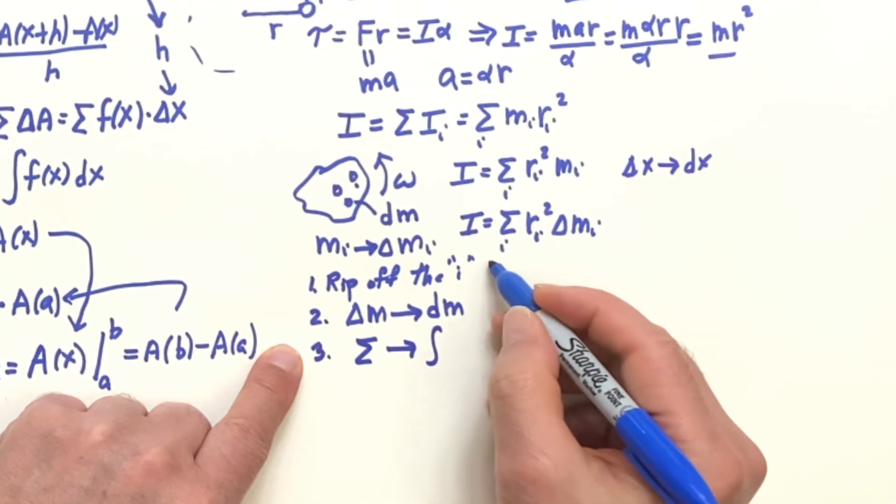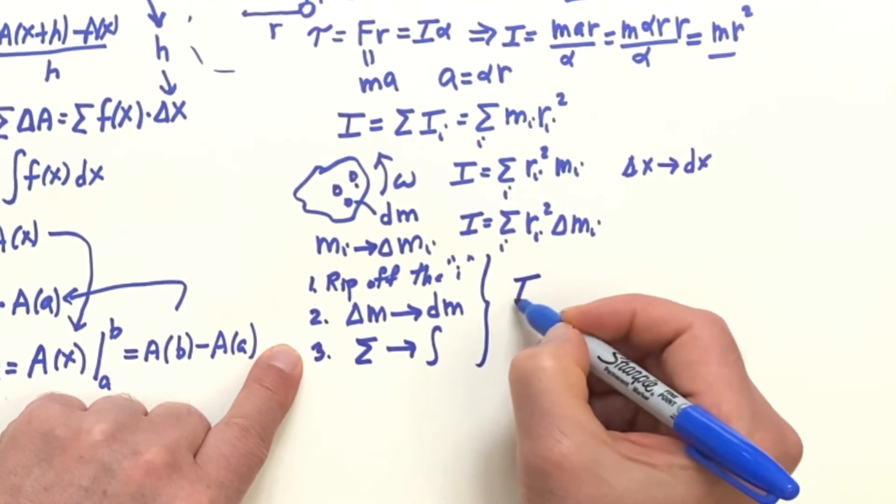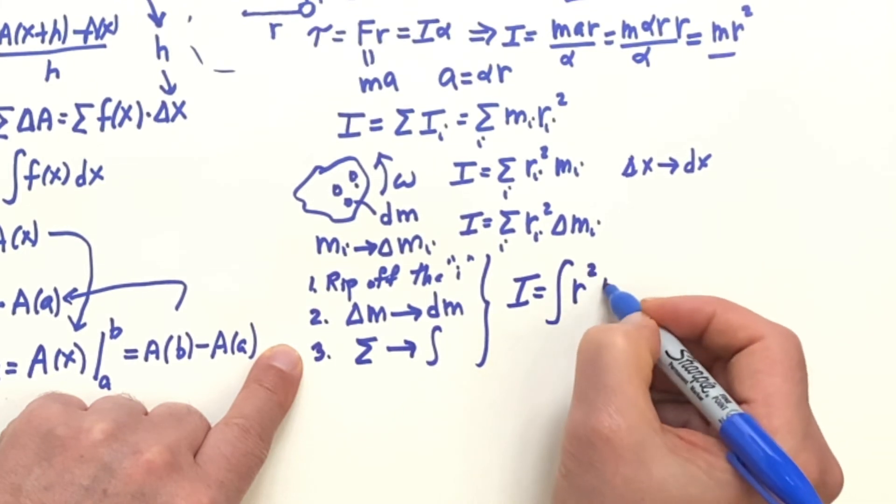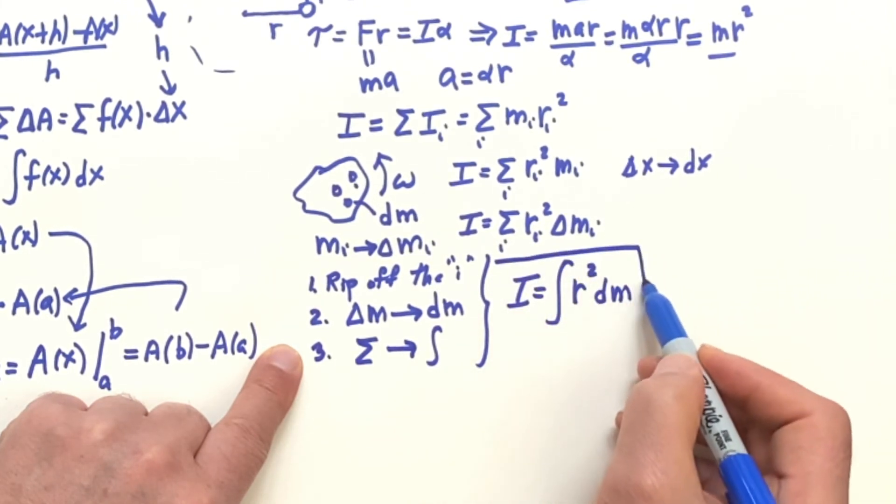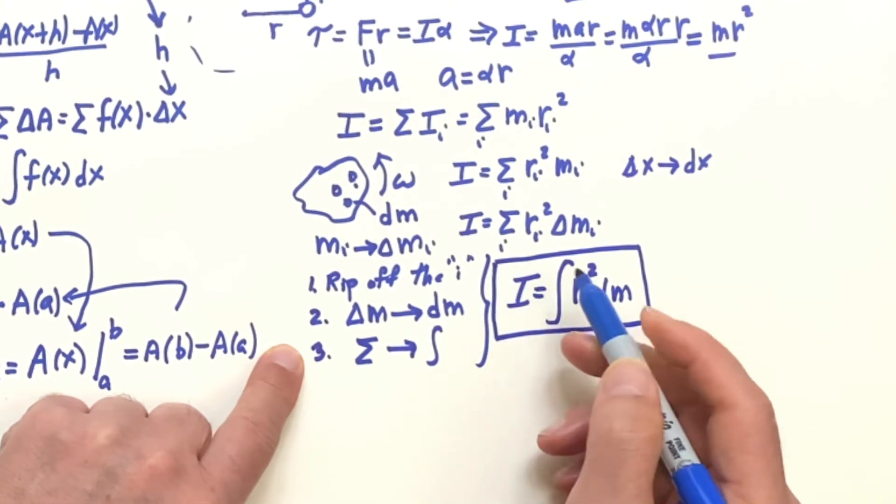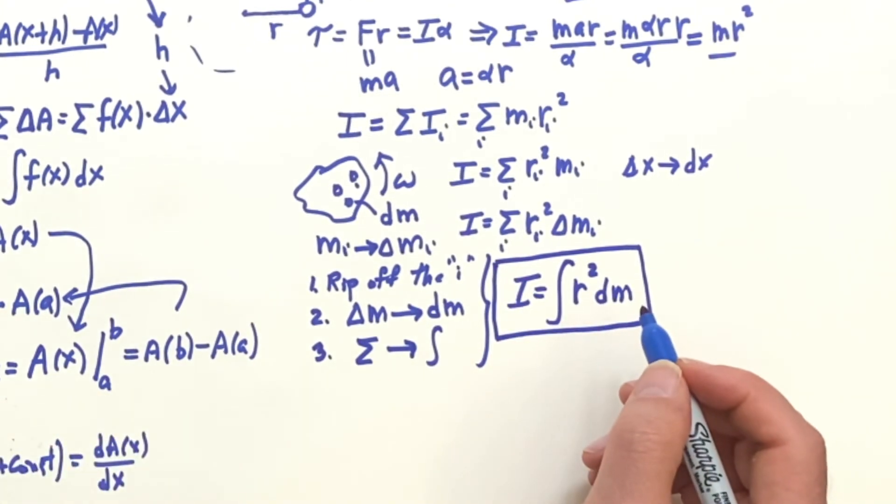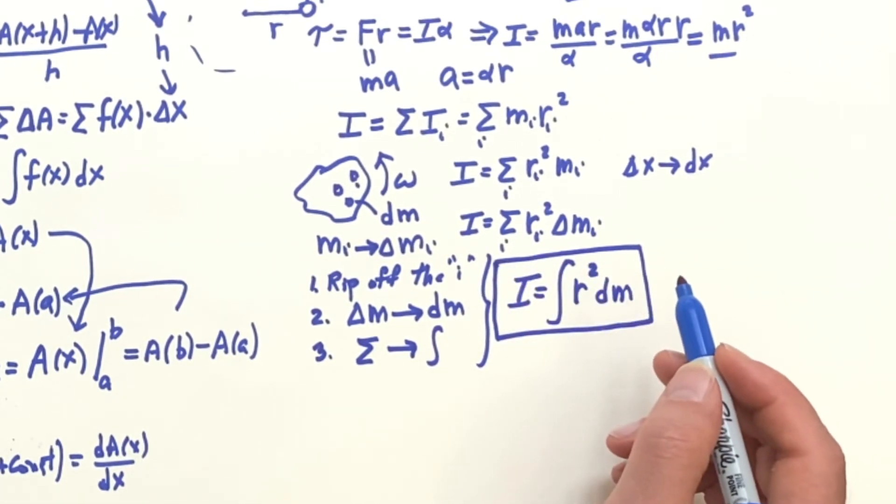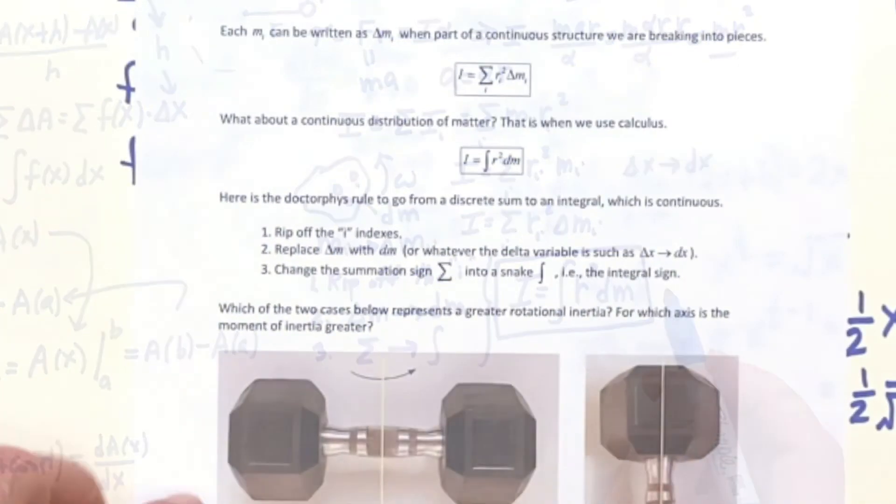So when you do these three steps, you get I as the integral of R squared dM, and this is what we're going to be looking at in this chapter over and over again, many, many, for many, many cases. The moment of inertia for a continuous distribution of matter.